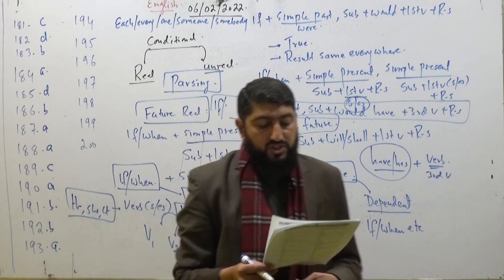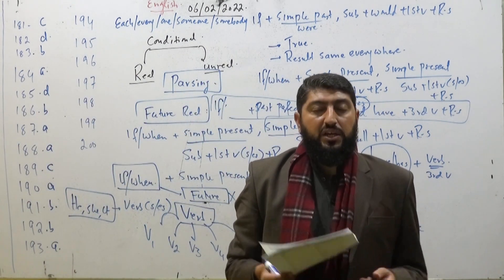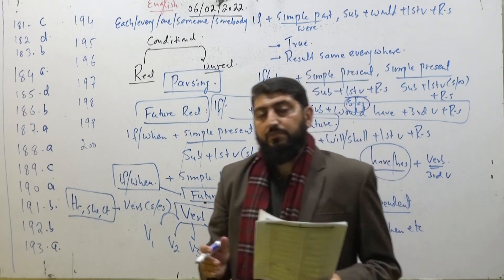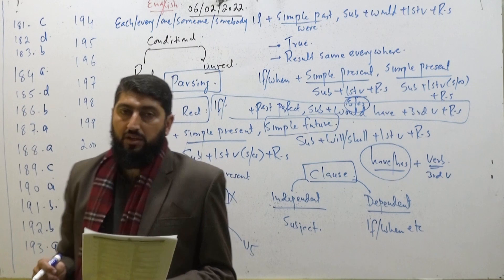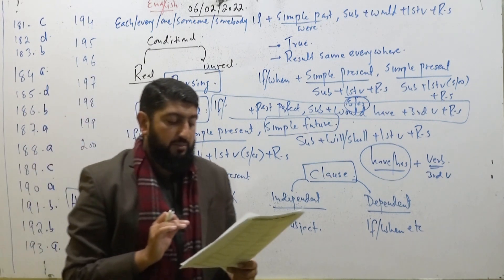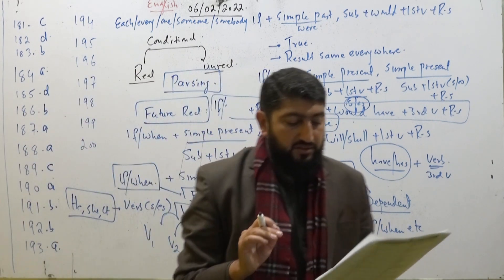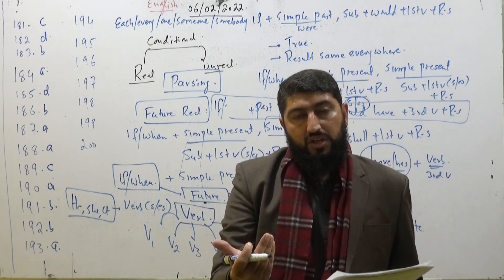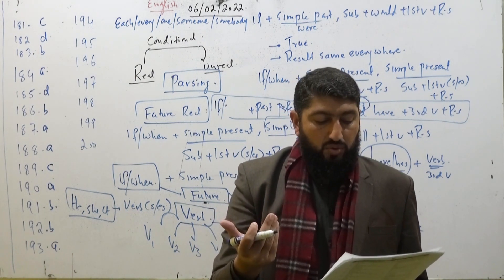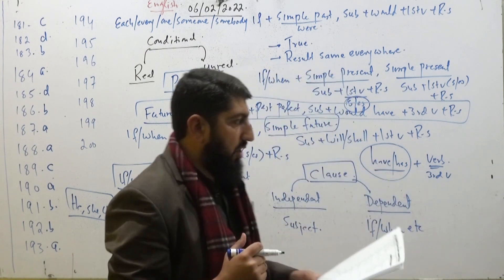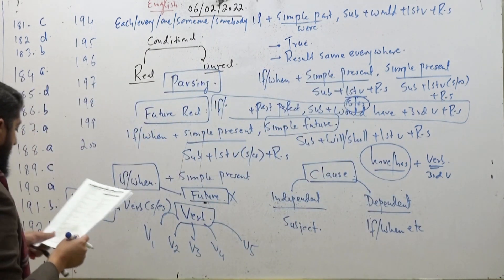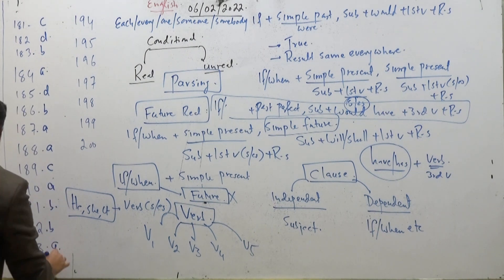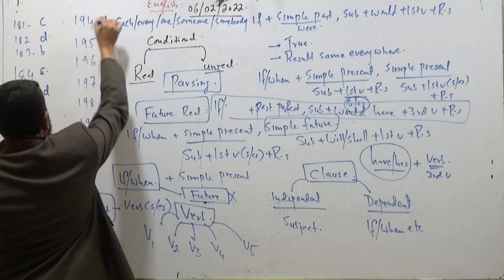MCQ 194: 'I wish I dash the president of America.' Again this is an unreal structure — also called subject-verb disagreement. After 'I wish', the structure is unreal/subject-verb disagreement. So option number D — 'were' — is the correct one.